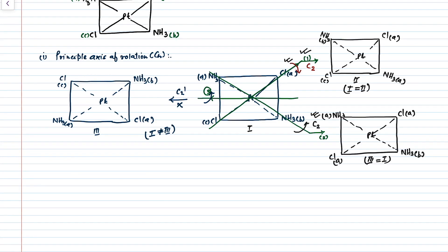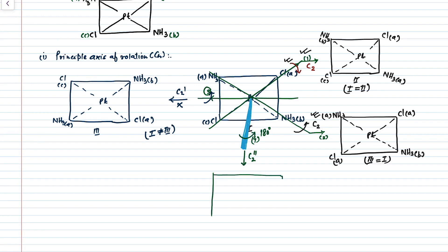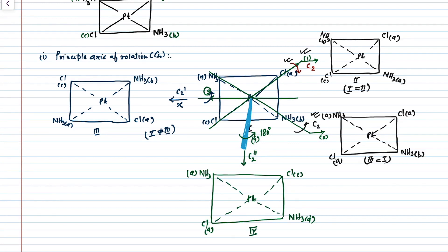One more axis is visible: axis number four, passing through platinum and perpendicular to the molecular plane. When we do the C2 double-dash operation — rotation by 180 degrees about this axis — we get a new geometry: Cl C, NH3 D, NH3 A, and Cl A. Comparing structure 1 and structure 4, we find they are equivalent to each other. So C2 double-dash is a symmetry element of this molecule.